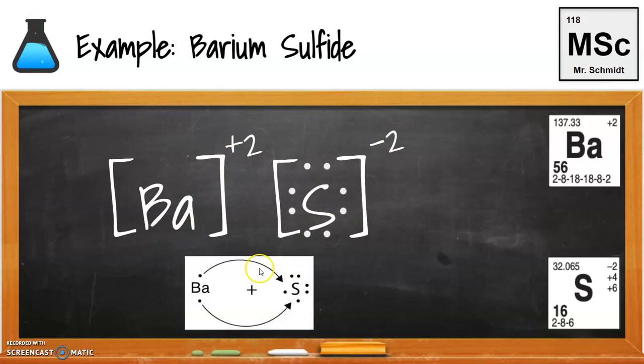If we were to do our dot diagram, we have barium here with our two dots indicating the two electrons. We have sulfur, again, with six dots because it's, again, in the sixth column. This dot is going to form a, or both these dots are going to move or transfer over to form that complete octet for barium sulfide.